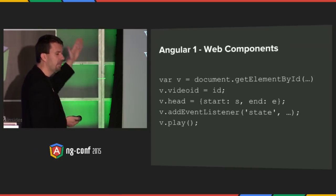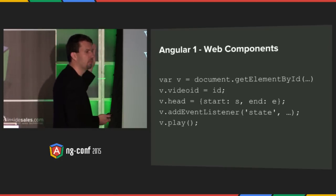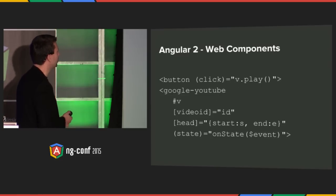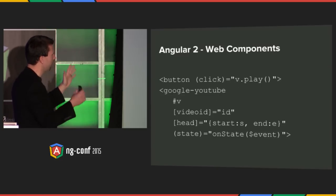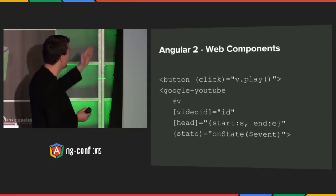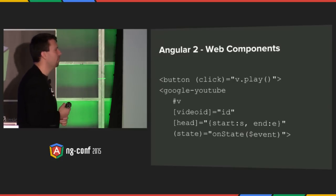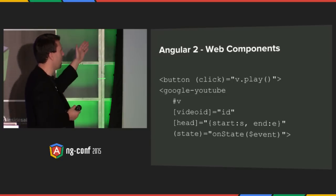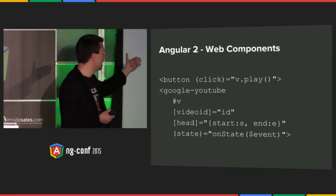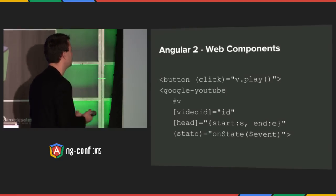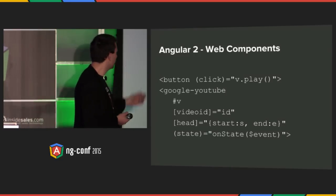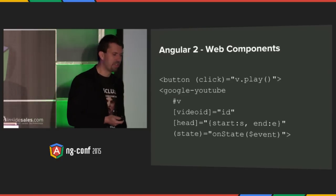Look at Angular 2 — this is essentially what you would like to write in code. You get a hold of the element, assign properties to it, set up a listener, call a method on it — it's that simple. We can express the same exact thing in Angular 2 syntax. We use click with parentheses to say this is an event. We use a hash variable reference to identify the element. Video and state are bound to properties, so state can have things other than strings — real objects. And we can bind to any custom event you can imagine, and call methods on it.